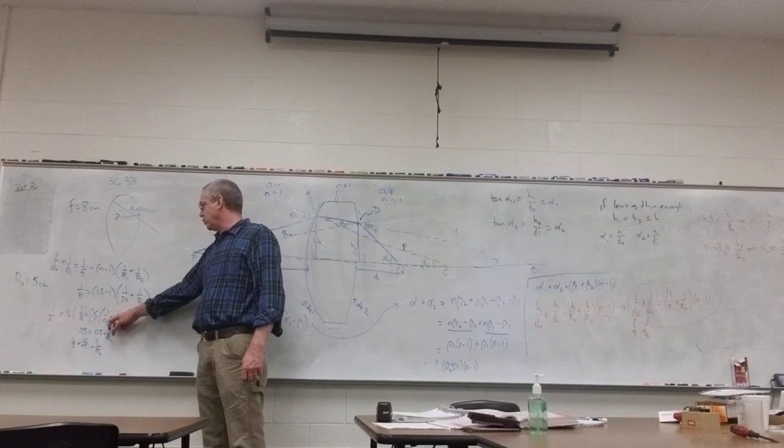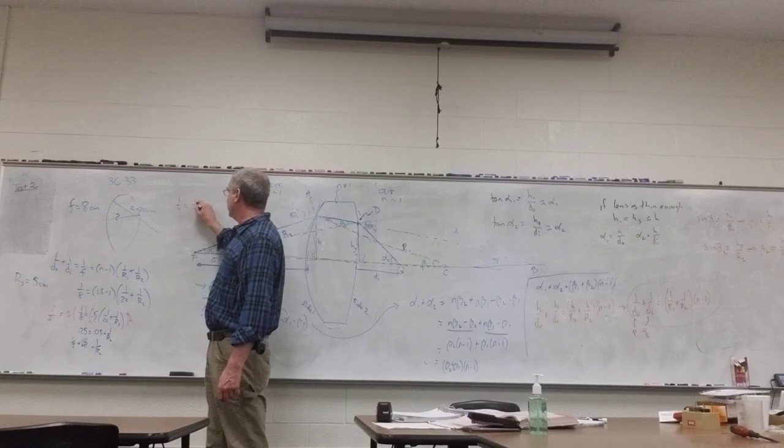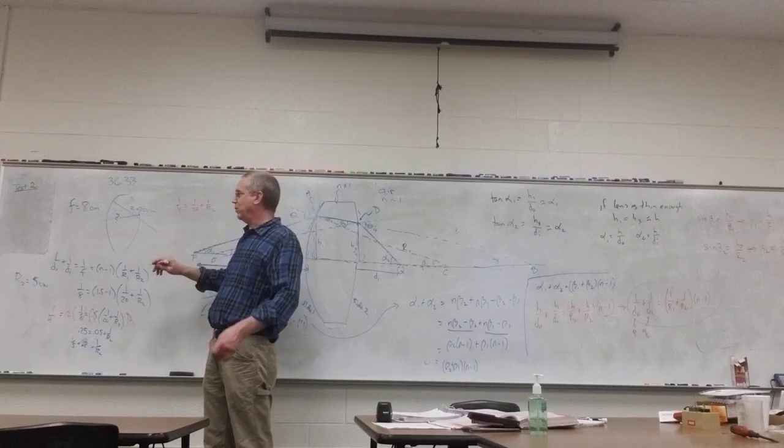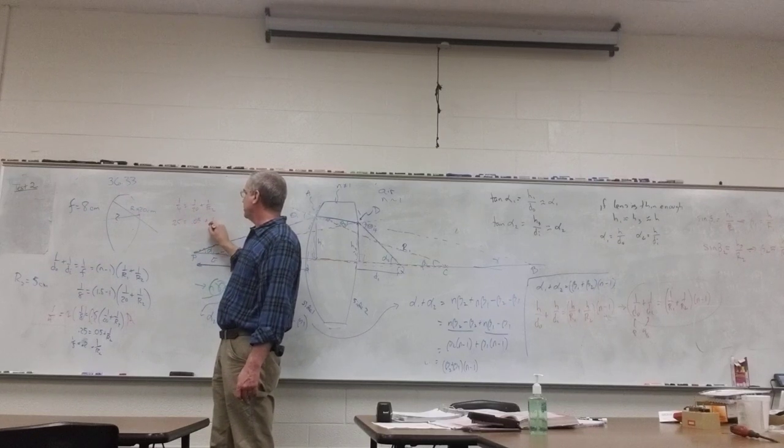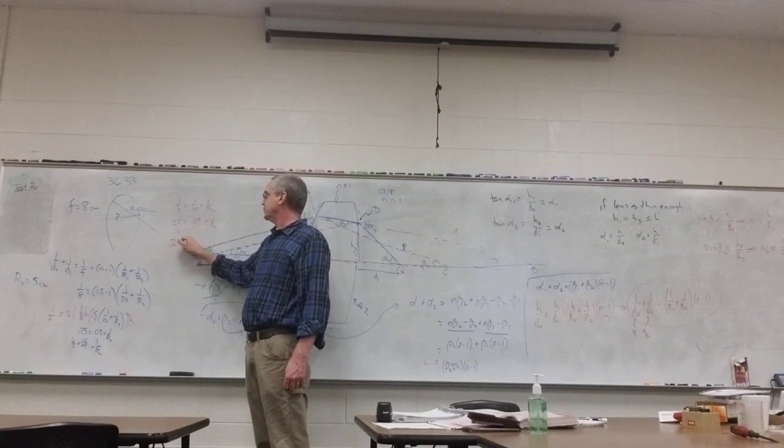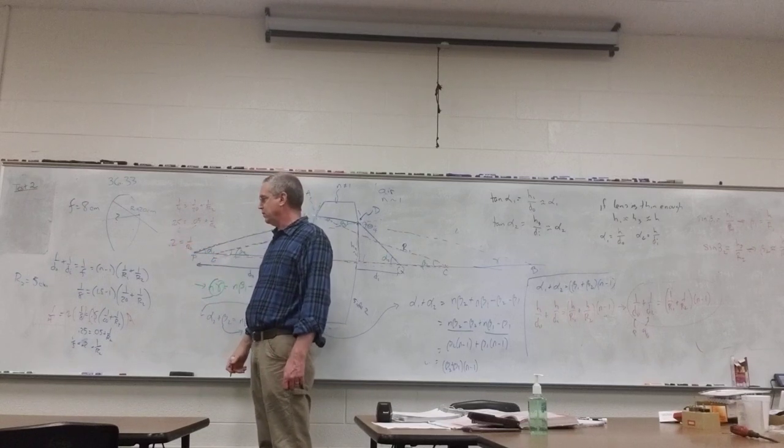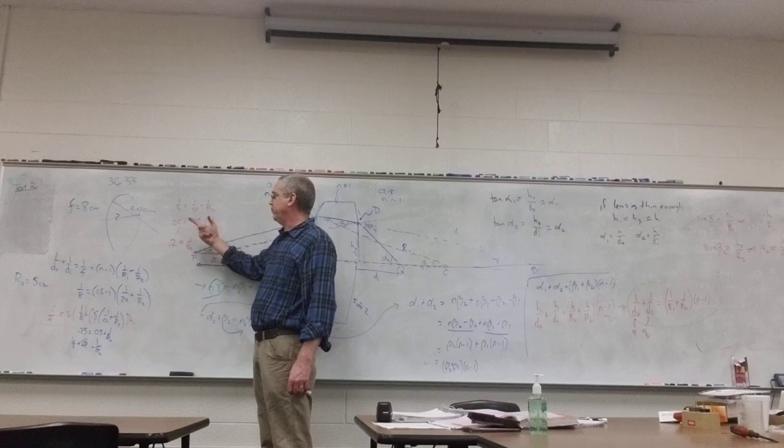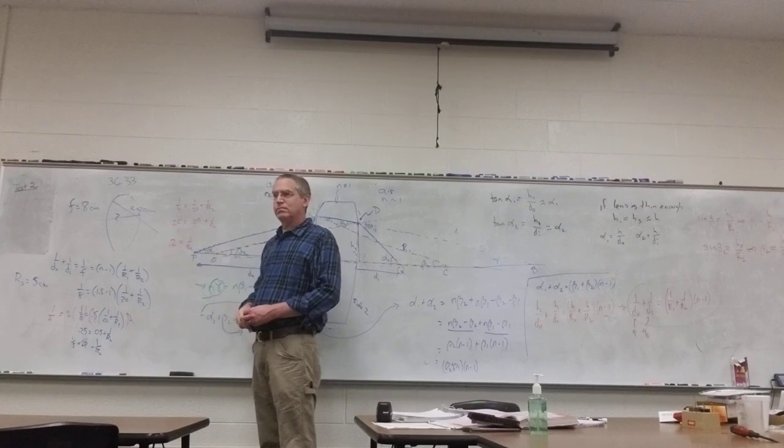What I'm left with is 1 fourth equals 1 twentieth plus 1 over R2. Decimals made sense to me at that moment. I know that's 0.25 and that's 0.05 plus 1 over R2. Then subtract 0.05 from both sides. 0.2 equals 1 over R2. I know 0.2 is 1 fifth, or 2 tenths. So when I flip it at the end to get my R2, my 2 tenths becomes 10 seconds, or 5.